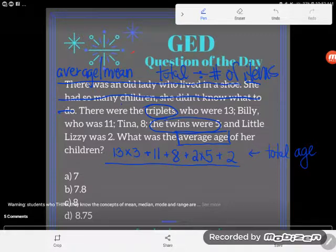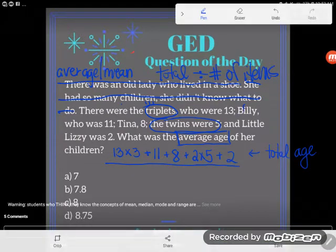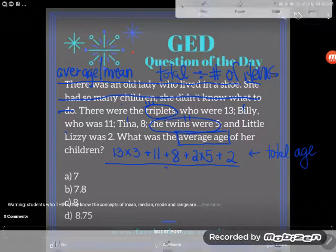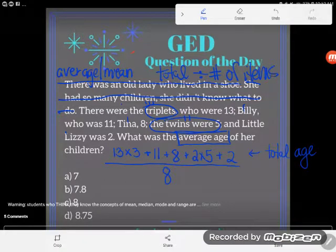Okay now when I go to divide, again I'm not trying to divide by the number of numbers, I'm trying to divide by the number of children because I'm finding the average age of the children. And so how many children do we have? Well the triplets, that's 1, 2, 3, then Billy gives me 4, Tina is 5, the twins will be 6 and 7, and little Lizzie will be 8. So I'm going to divide my total by the eight children, and the total ages divided by the eight children will give me the average age of the children.